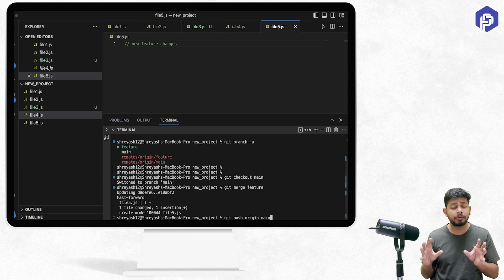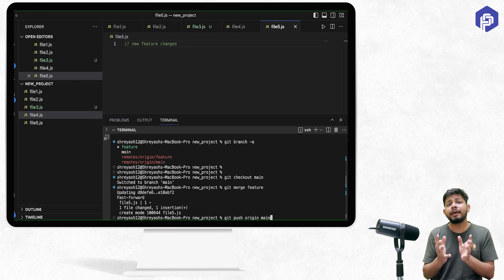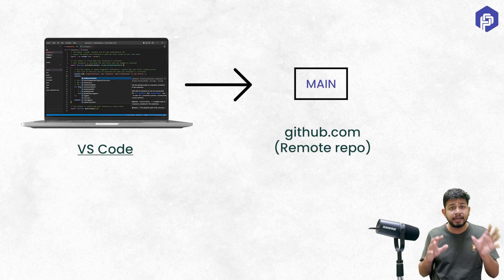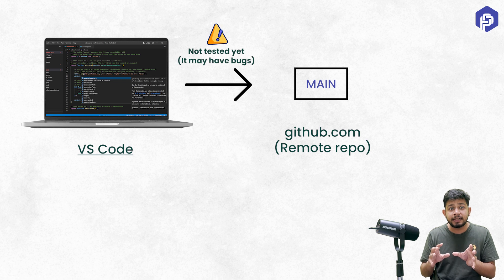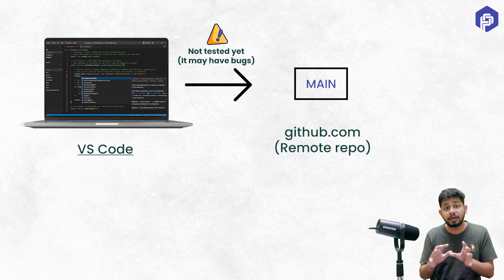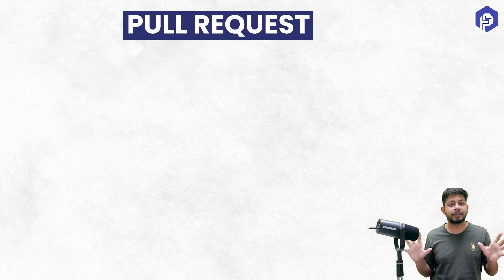However, there is an issue with this approach. While it does bring things to the main branch on the remote, the actual problem is that if we push this change to the main branch and no one has tested it, these changes can create bugs or crashes in the application.